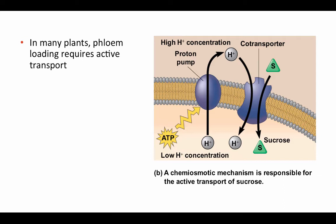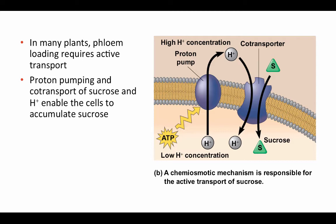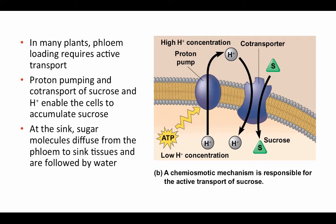In many plants, phloem loading requires active transport. This makes sense because with a very high sugar concentration around the source, you need to accumulate that sugar into sieve tube elements, moving it against its concentration gradient. This is done by proton pumping and then co-transport of sucrose and protons. ATP is used to actively pump protons out of the cell, and then a co-transporter protein allows the protons to move back into the cell along their electrochemical gradient, but only if they take a sucrose molecule with them.